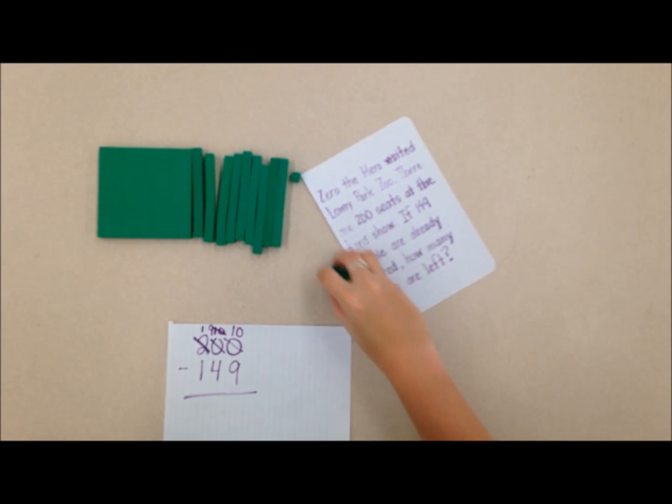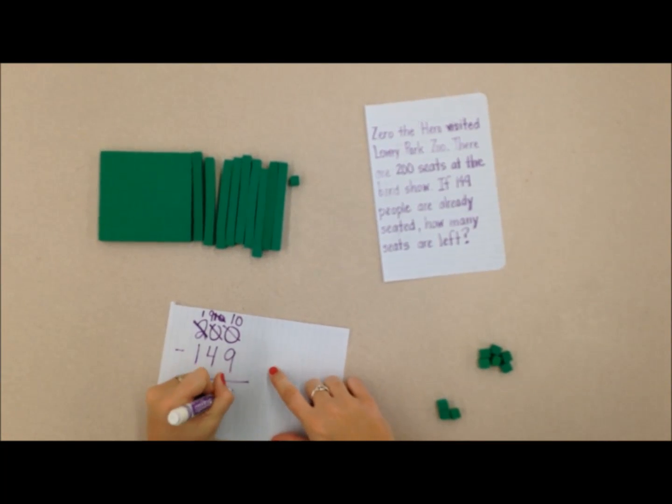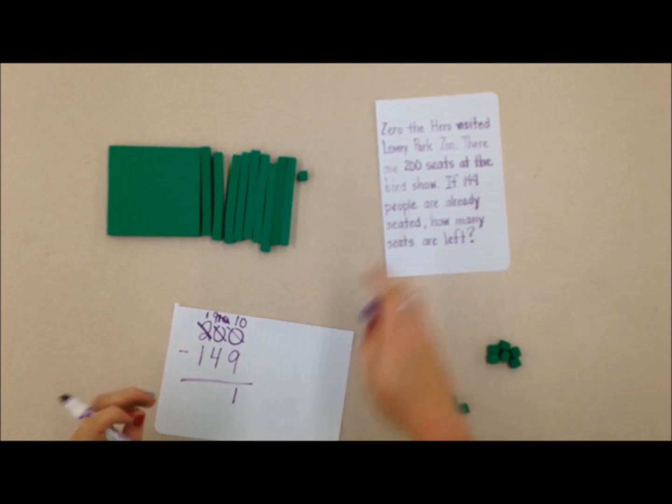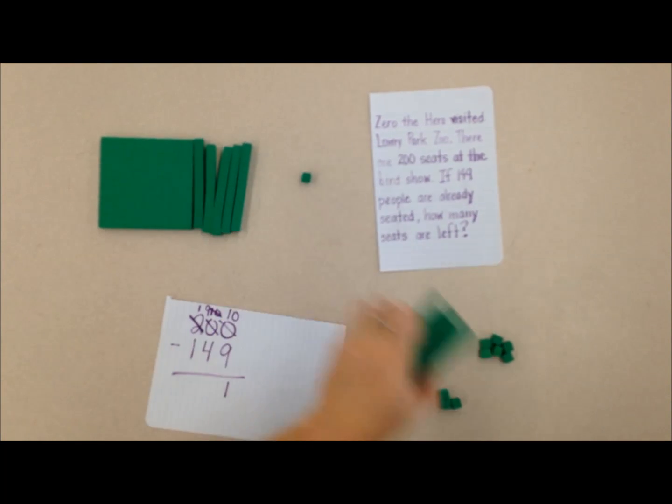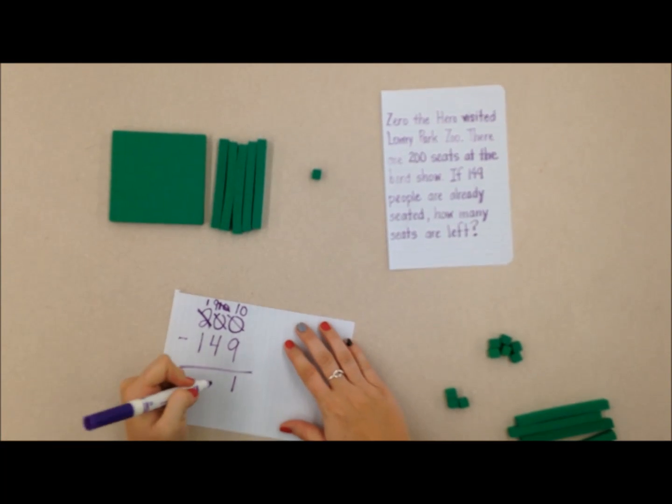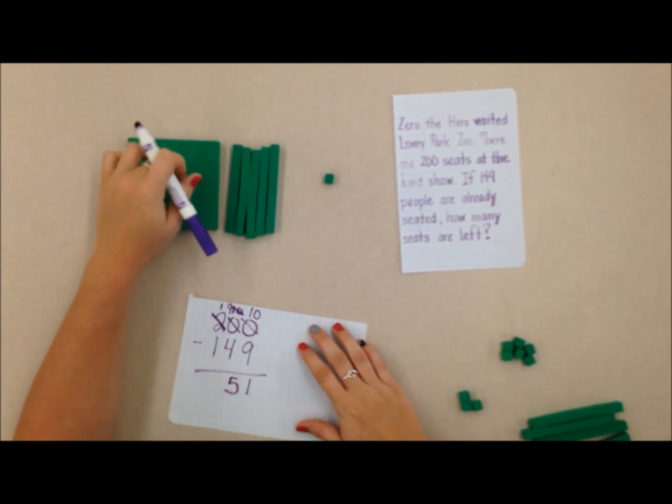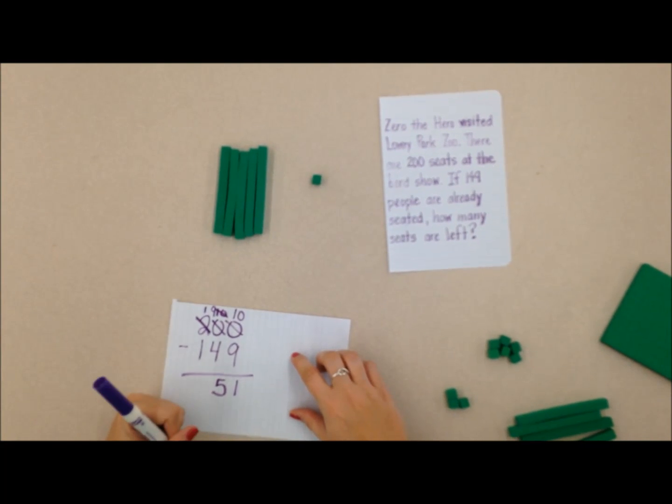So now I'm able to subtract those nine ones, and when I do that I have one one remaining. Now I can subtract my four tens, so one, two, three, four tens, and when I do that I have one, two, three, four, five tens remaining. And now I can subtract my 100, and when I do that I have zero hundreds remaining.